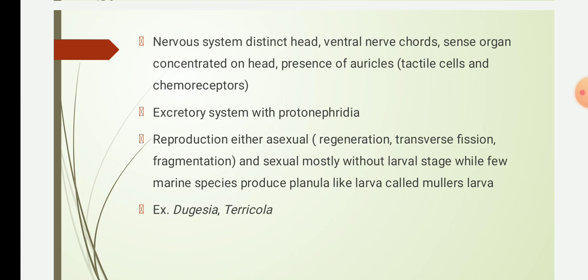Asexual reproduction also occurs by transverse fission, in which an anterior end splits from the posterior end. They sometimes produce a chain of zooids that superficially resembles segmentation. In fragmentation, particularly in land planarians in unfavorable environments, they break up into dozens of blobs of slime, and within a few hours each piece becomes a new worm.